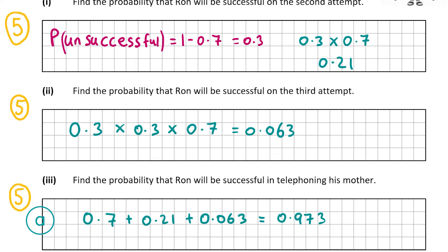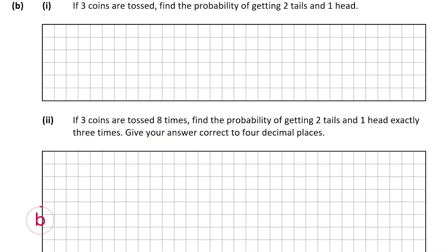Now let's look at part B. Part B1 is worth 5 marks and says: if three coins are tossed, find the probability of getting two tails and one head. There are three ways to get this — tail, head, tail (THT); tail, tail, head (TTH); or head, tail, tail (HTT). It's important to take into account that the result can occur in different orders.